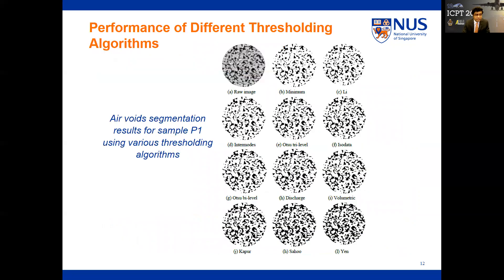These are the air-void segmentation results for sample P1 using various thresholding algorithms. In the segmented slices, the black color indicates the air-void phase, whereas the white color indicates the cement and aggregate phase. OTSU's tri-level algorithm uses two different threshold values compared to the other algorithms, and can predict three different phases — aggregates, cement, and air voids — whereas other algorithms can predict only the solid and void phases.